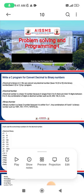Decimal to binary in C: we can convert any decimal number, which is base 10 (0 to 9), into binary number, which is base 2 (0 or 1), by C program. A decimal number is a base 10 number because it ranges from 0 to 9.